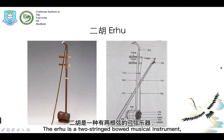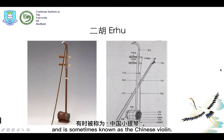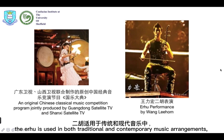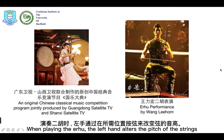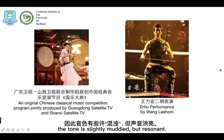The erhu is a two-string bowed musical instrument which may also be called a southern fiddle and is sometimes known as a Chinese violin. As a versatile instrument, the erhu is used in both traditional and contemporary music arrangements such as in pop, rock and jazz. When playing the erhu, the left hand alters the pitch of the strings by pressing on the string at the desired point. As the instrument has no frets, the tone is slightly muddy but resonant.